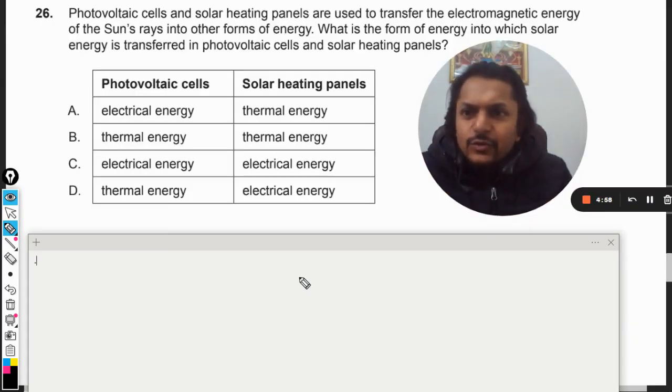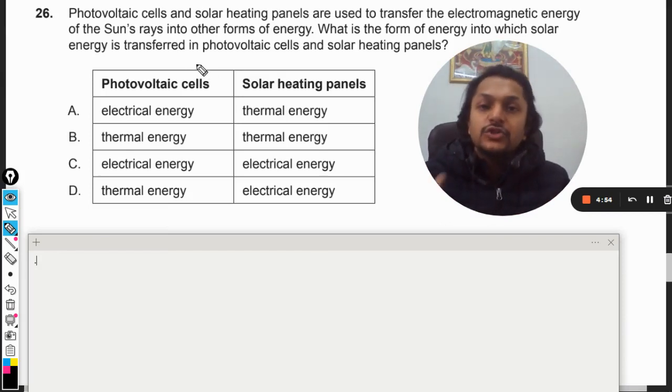Okay dear students, let us see this question. Photovoltaic cells and solar heating panels are used to transfer the electromagnetic energy of the sun's rays into other forms of energy. What is the form of energy into which the solar energy is transferred in photovoltaic cells and solar heating panels?